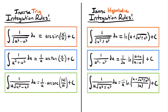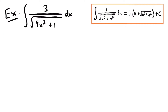Now that we've looked at the differences, we are ready to use these new integration rules with examples. For our first example we have the integral of 3 divided by the square root of 9x squared plus 1 times dx. For this integral we are going to use the first integration rule, which corresponds to our inverse hyperbolic sine and inverse hyperbolic cosine functions — using the logarithmic definition of those functions.